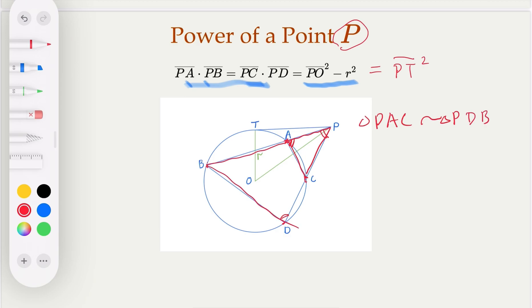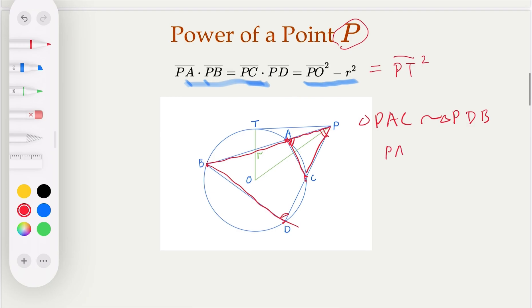So the sides are proportional, which means PA over PD equal PC over PB. And then the cross product PA times PB equal PC times PD. Later, you can also use a similar argument to prove that this quantity equal PT square. So I'm not going to prove it here. You can look it up on the internet afterwards.